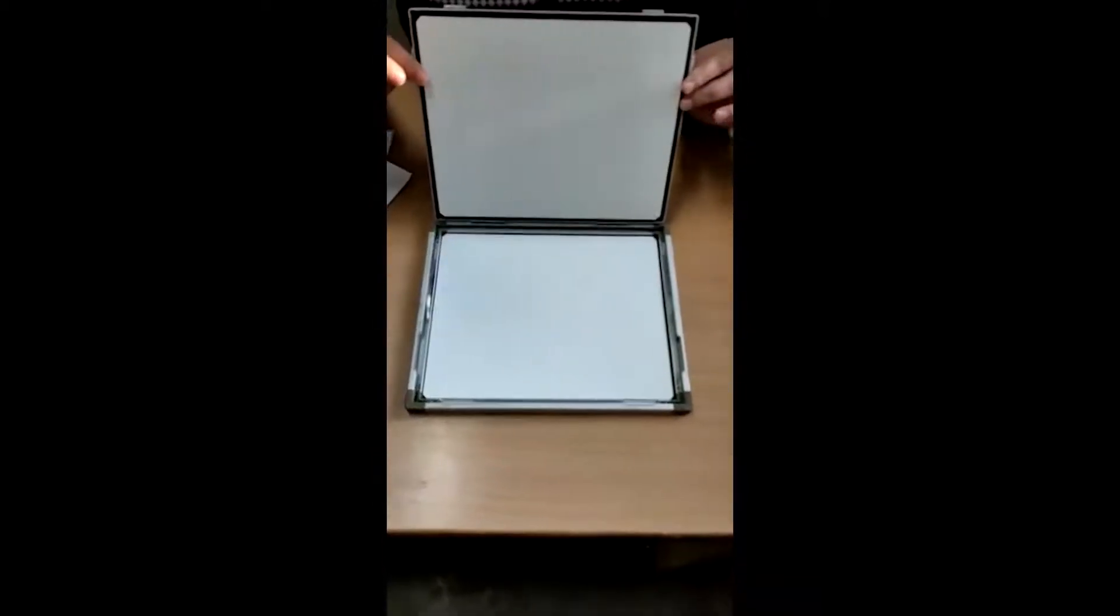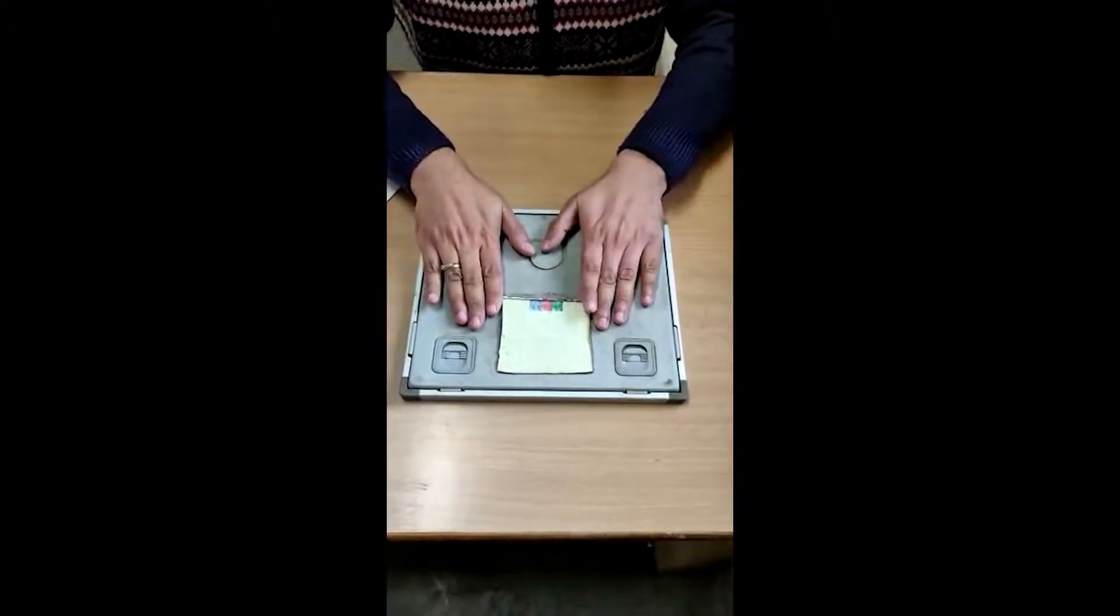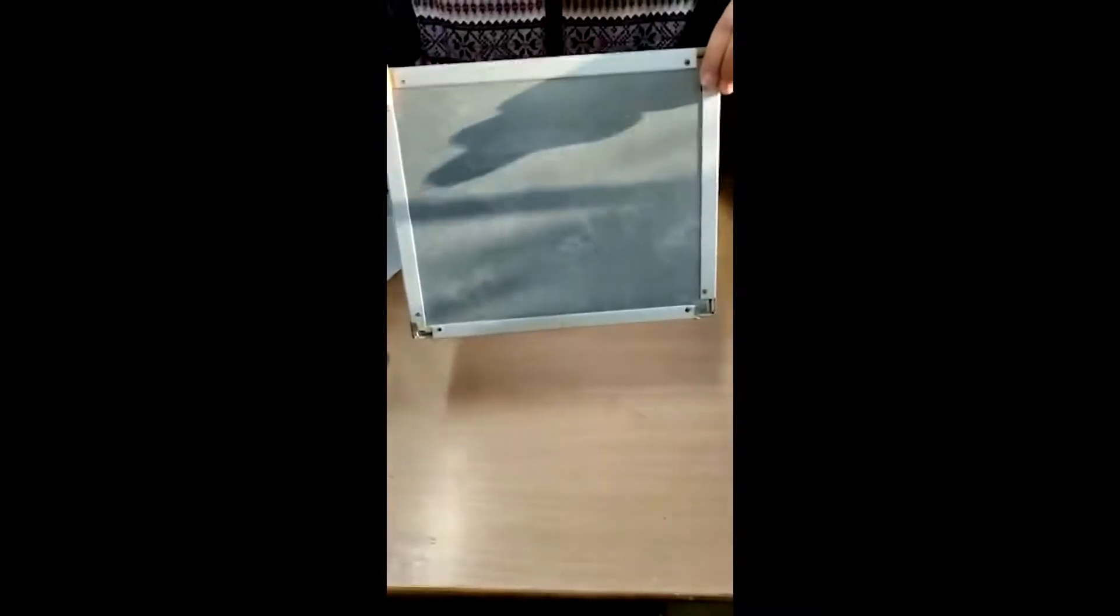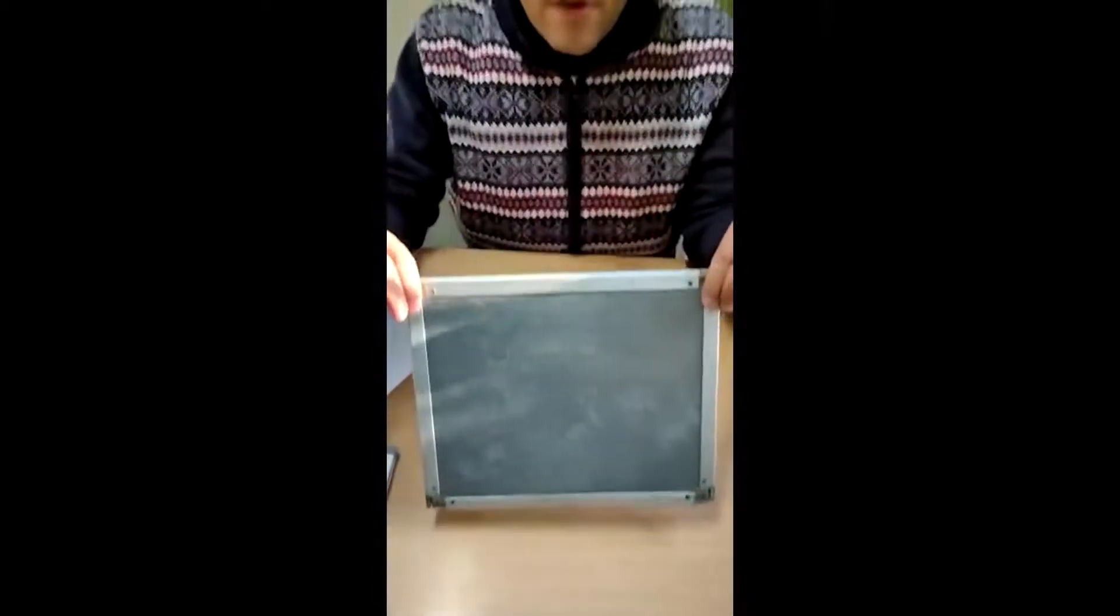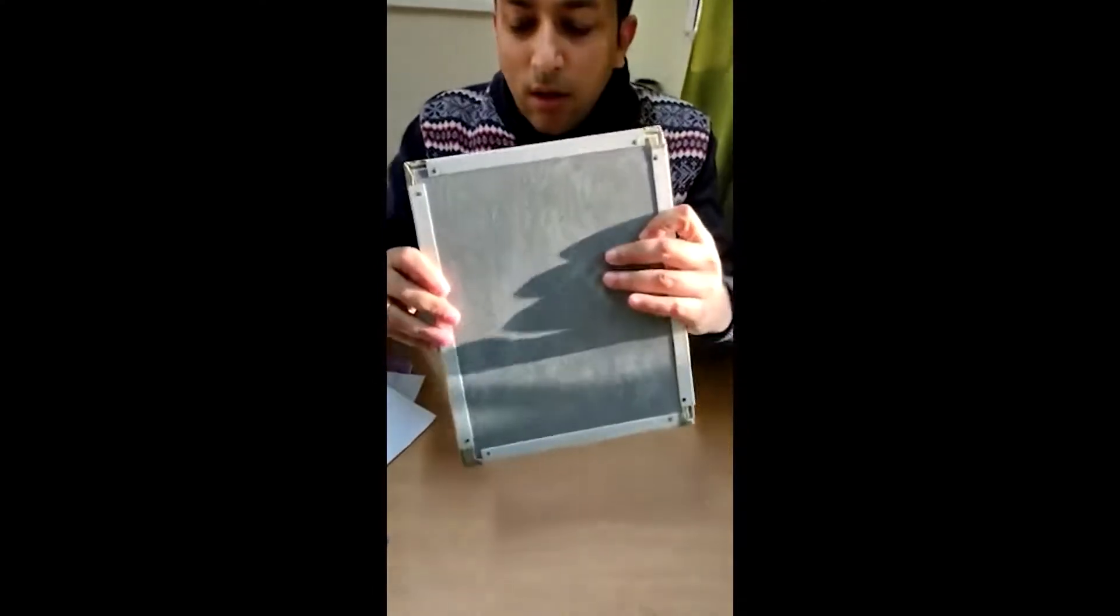So this is the concept of extraoral films and cassettes. This is 8 by 10 inches, used to take all the extraoral radiographs like PNS view, SMV view, PA view, lateral cephalogram, all these things can be taken with this particular cassette.